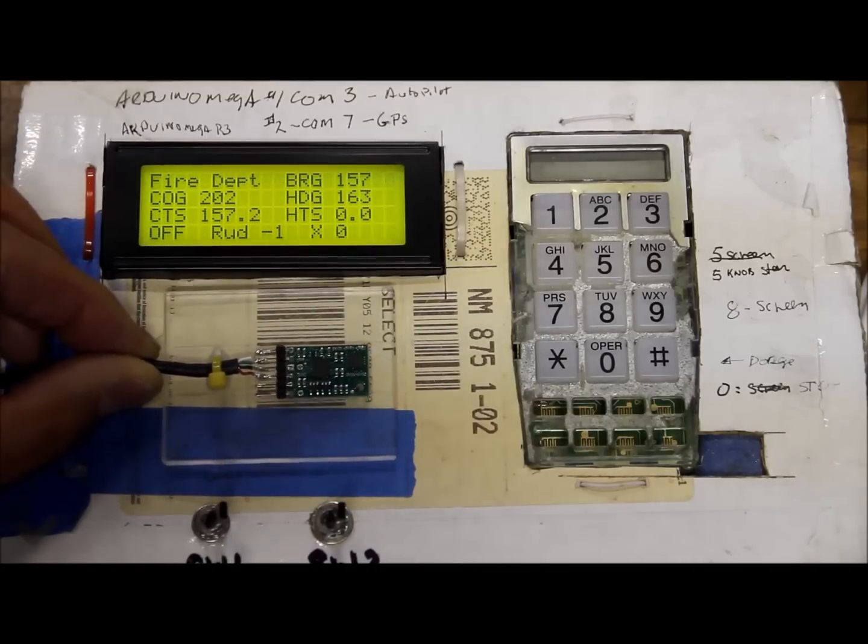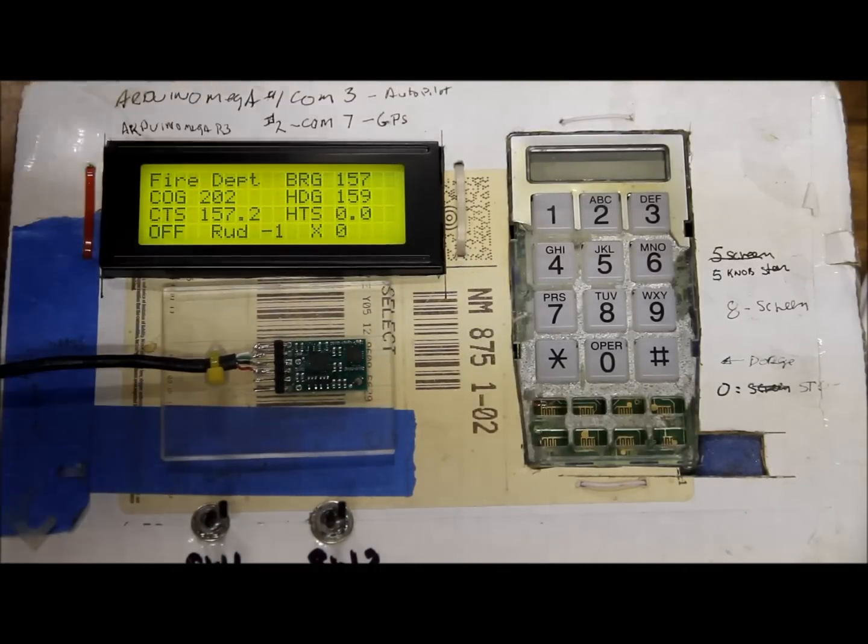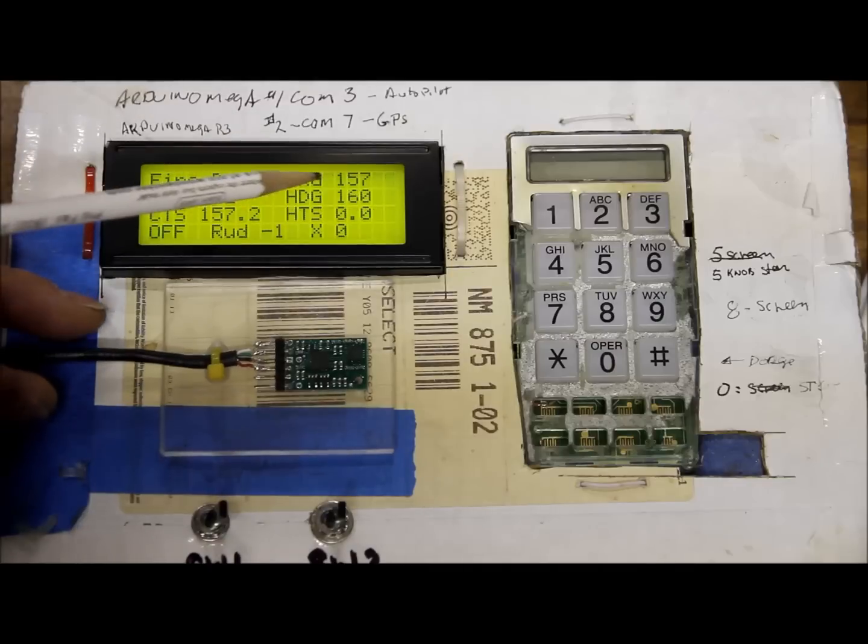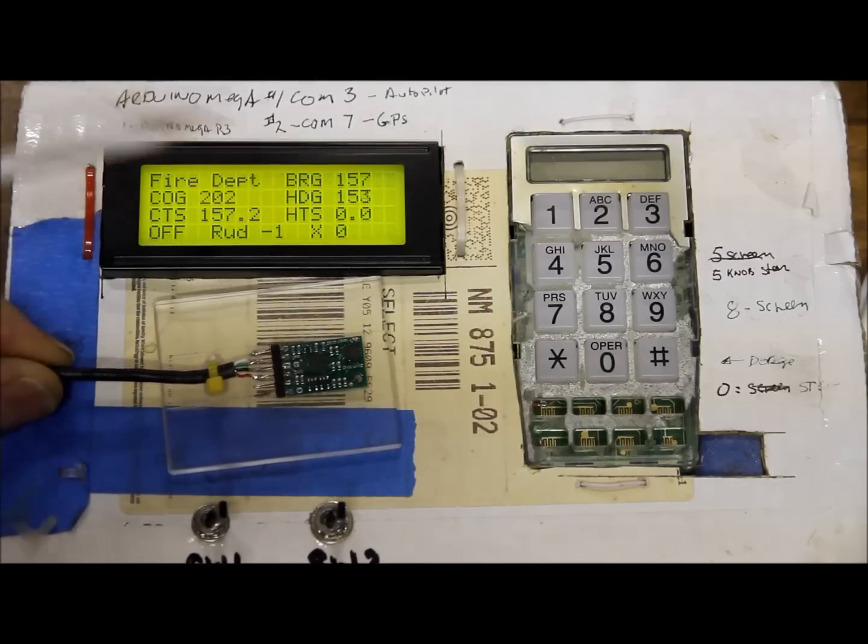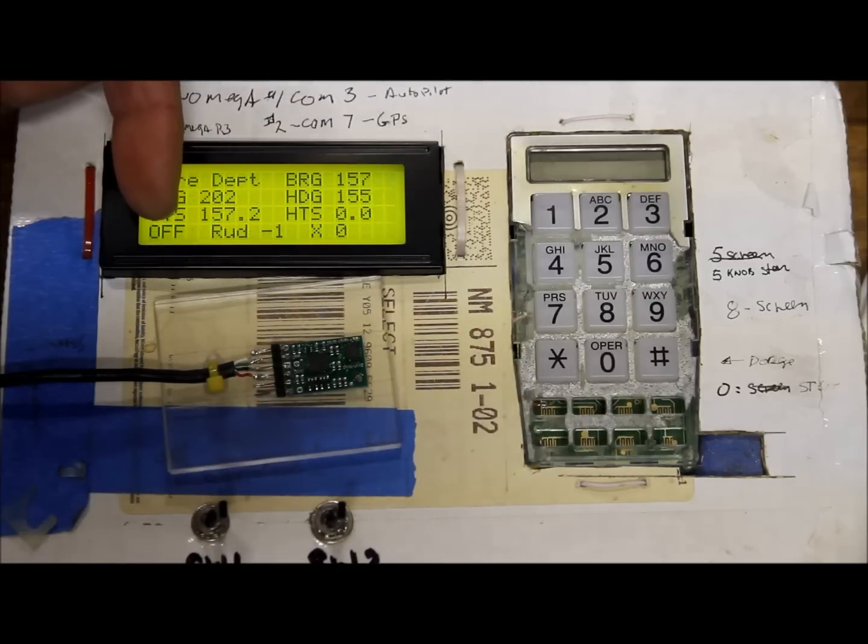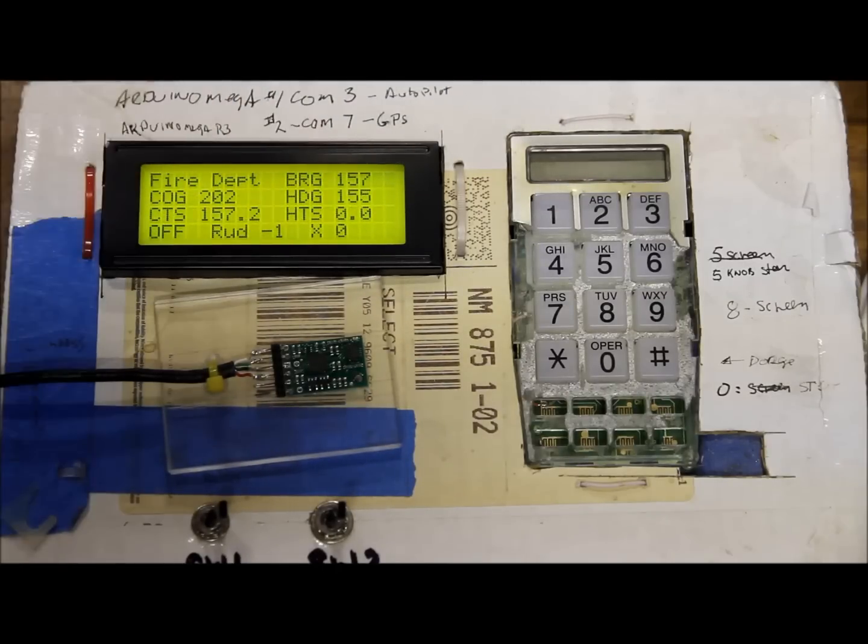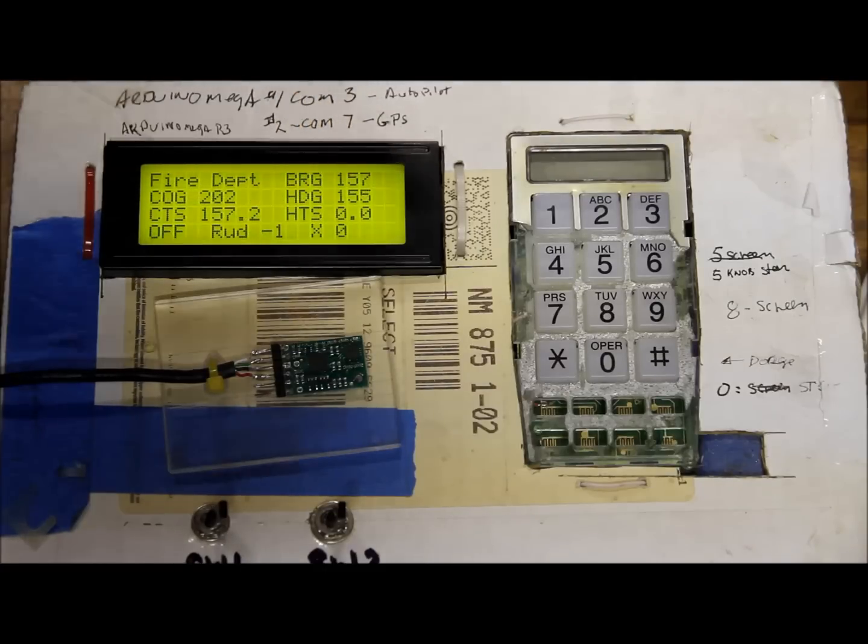Right here is the heading that the compass is reporting. You can see as I rotate this that compass heading is changing. Now when I hit key 1 this will go to compass, and this heading to steer HTS will capture this heading and that will be the heading that the boat maintains.